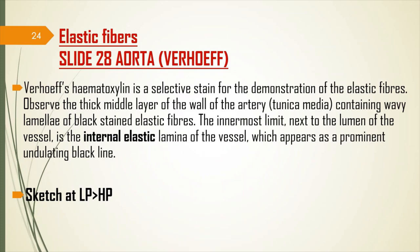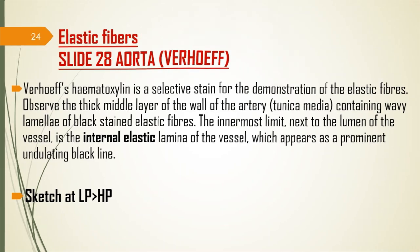The last type of fiber is elastic fibers seen in the aorta, demonstrated using hematoxylin staining. Observe the middle thick layer of the artery called the tunica media, where you find the elastic fibers. Remember blood vessels have three layers: the tunica intima with epithelium, the tunica media with muscle layer and connective tissue, and the tunica externa. Here we focus on the tunica media, which contains wavy lamellae of black-stained elastic fibers.